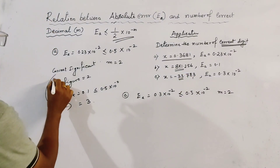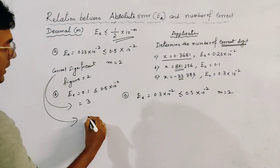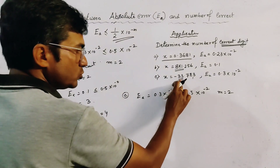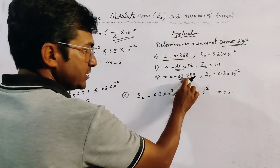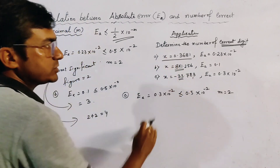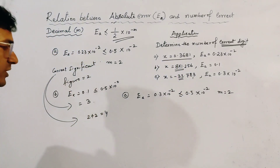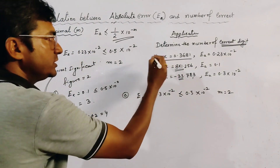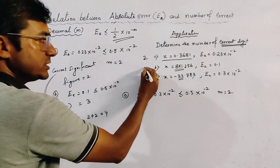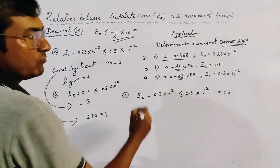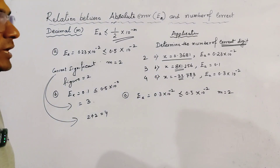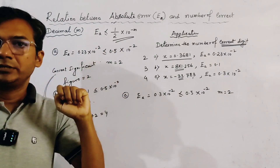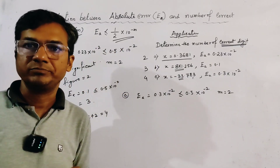The answer is 2 + 2 = 4, because there are 2 significant figures after the decimal and 2 before the decimal. So the total number of correct significant figures is 4. In summary: case (a) gives 2, case (b) gives 3, and case (c) gives 4. These are the applications of this important relation. Thank you for watching.